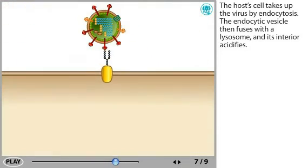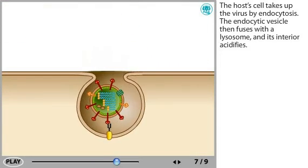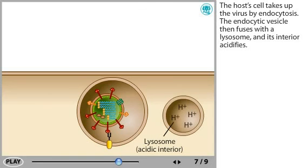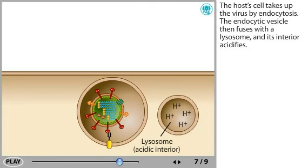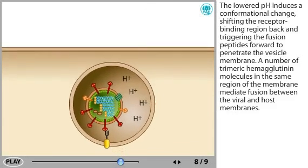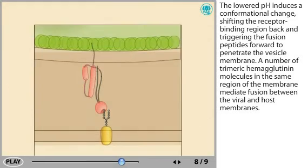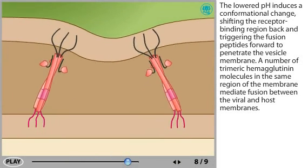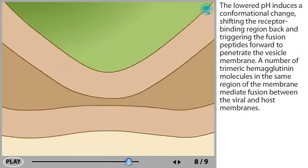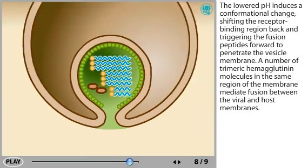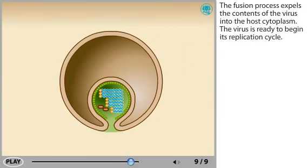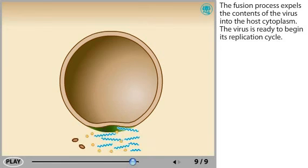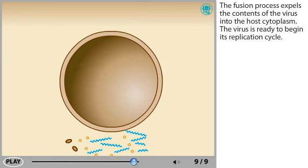The host cell takes up the virus by endocytosis. The endocytic vesicle then fuses with a lysosome and its interior acidifies. The lowered pH induces a conformational change, shifting the receptor binding region back and triggering the fusion peptides forward to penetrate the vesicle membrane. A number of trimeric hemagglutinin molecules in the same region of the membrane mediate fusion between the viral and host membranes. The fusion process expels the contents of the virus into the host cytoplasm, and the virus is ready to begin its replication cycle.